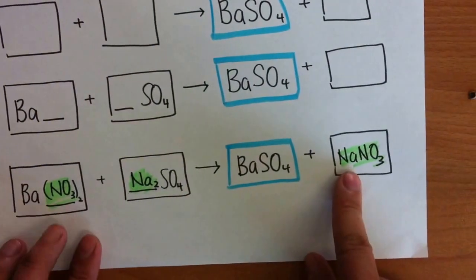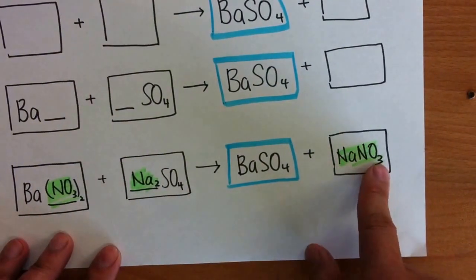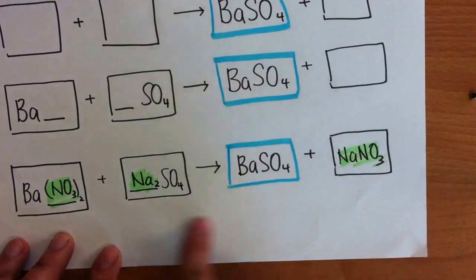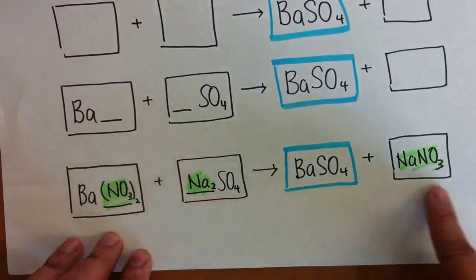And using the charge in the formula, it is one-to-one ratio. Therefore, it's NaNO3. The equation is not balanced. And you have to balance it yourself.